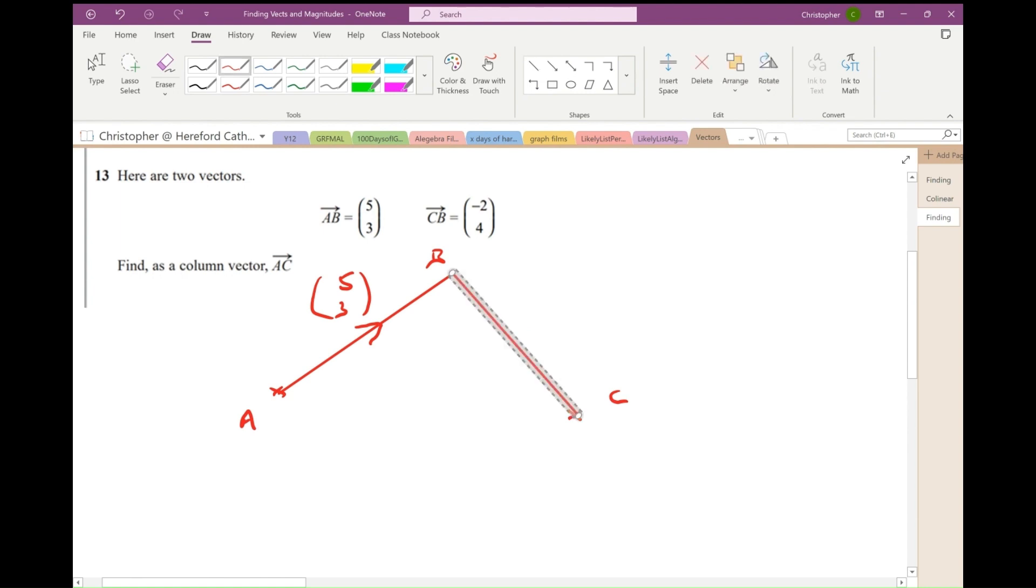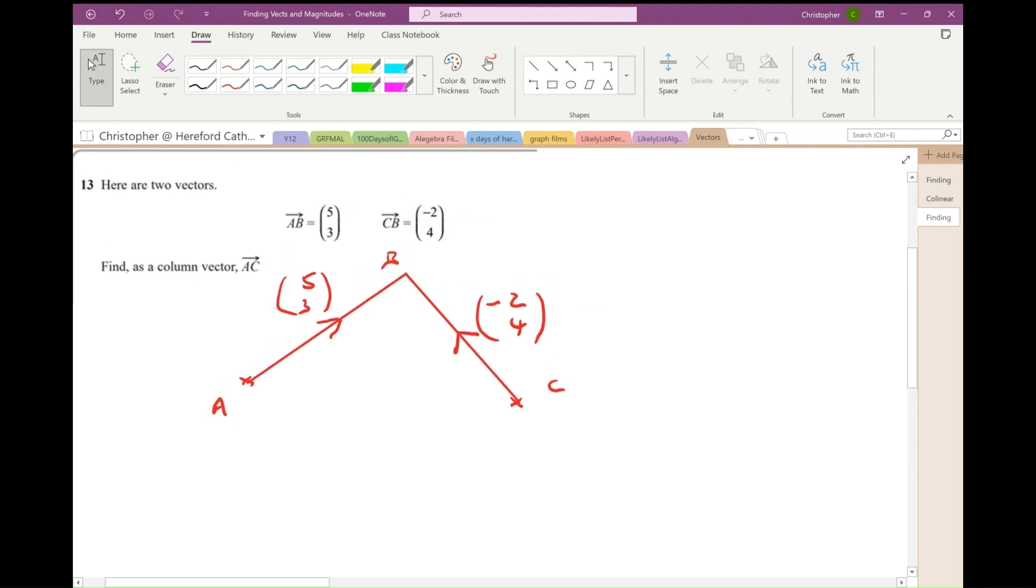Now, C to B. So beware, it's going that way, isn't it? C to B is (-2, 4). Okay, and I'm asked to find, as a column vector, the vector AC. So if I was going to go from A to C, I would have to go from A to B and then B to C. Well, A to B is (5, 3). And then I need to go from B to C. Well, that's going to be the opposite of CB. So it's going to be (2, -4). So my resulting vector is (7, -1). And that's my answer.